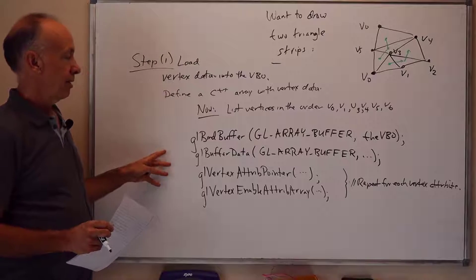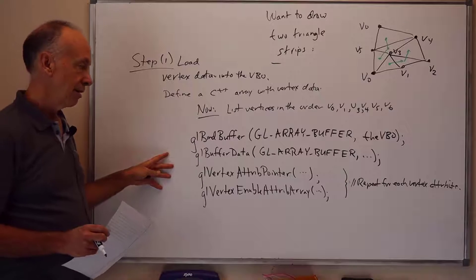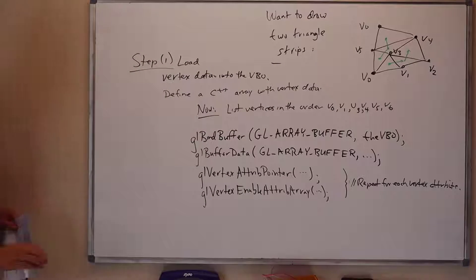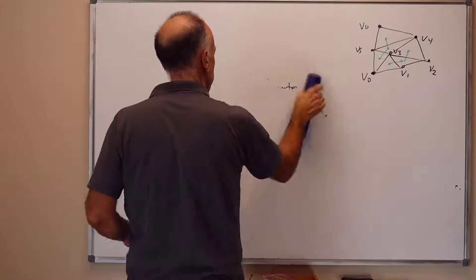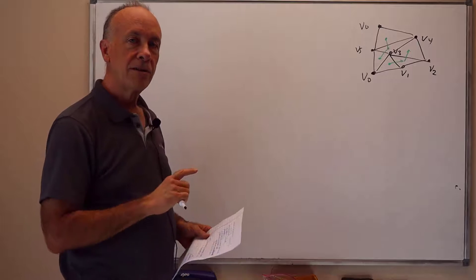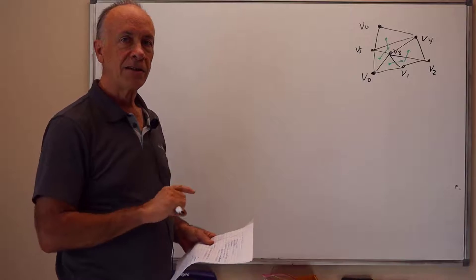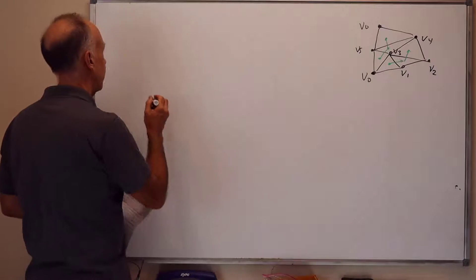But if we're using elements, we do another buffer that's called the element buffer or the EBO. Here I'll show you first the code to set up the EBO and load the data into it, and then I'll show you how the GLDrawElements commands work.